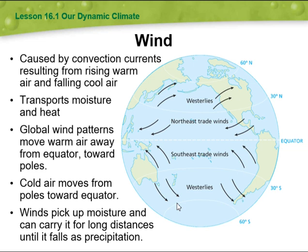Wind is driven by convection currents resulting from rising warm air and falling cool air. Wind transports moisture and heat, and global wind patterns move warm air away from the equator towards the poles, while cold air moves from the poles towards the equator.